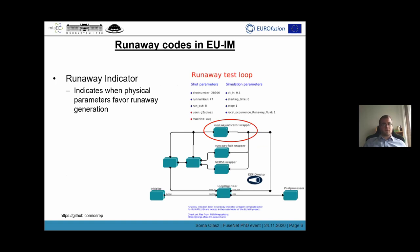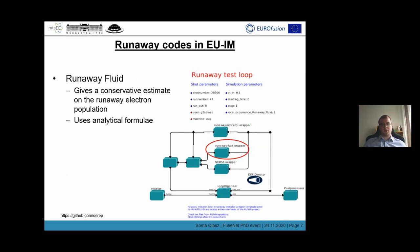One such workflow can be shown here, where this is a runaway electron test workflow developed in this framework. There are three different runaway electron codes implemented into this workflow. The first is the runaway indicator, a simple code to indicate when the physical parameters during the simulation favor runaway electron generation.